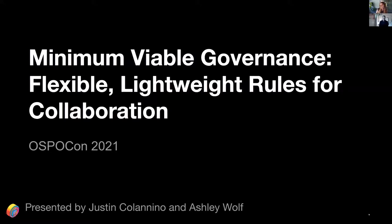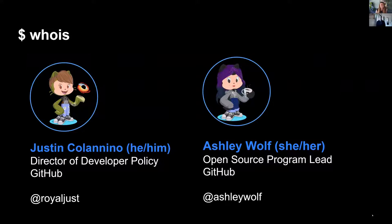Just a quick description of who we are. I'm Justin Colonino, a director of developer policy here at GitHub and also an open source lawyer, both on the GitHub side and I also dabble from time to time on the Microsoft side as well. And I'm Ashley Wolf. I joined GitHub a few months ago to lead our open source program office. I help staff with their open source engagements and I also work with companies building out and growing their open source program offices.